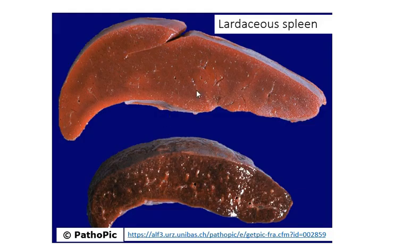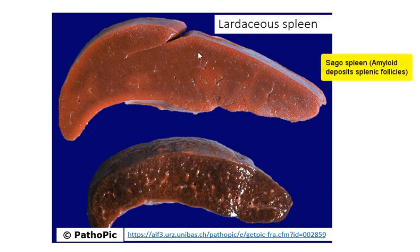Here is an example of amyloidosis involving the spleen. In the spleen, it is interesting because there are two patterns of involvement. One where the amyloid deposits go into the follicles in the spleen and give you little pale spots all over the spleen — that is known as sago spleen. This is the other appearance, which is known as lardaceous spleen, where the amyloid is a little bit more diffuse.